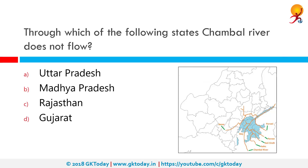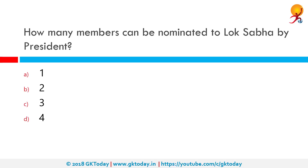Through which of the following states does the Chambal river not flow? The Chambal river, as you can see on the map, is a tributary of the Yamuna river. The river flows north to northeast through Madhya Pradesh, running for a time through Rajasthan, then forming the boundary between Rajasthan and Madhya Pradesh before turning southeast to join the Yamuna in Uttar Pradesh. So the only state it does not flow through is Gujarat.